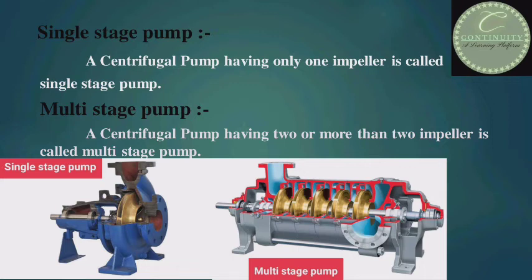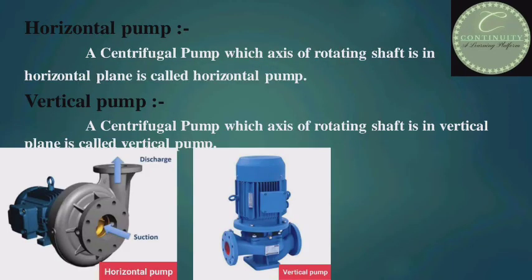The next classification is the horizontal pump. A centrifugal pump whose axis of the rotating shaft lies in the horizontal plane is called a horizontal pump. In the picture of the horizontal pump, you can see that the axis of the pump shaft is in the horizontal direction — that is why it is called a horizontal pump.